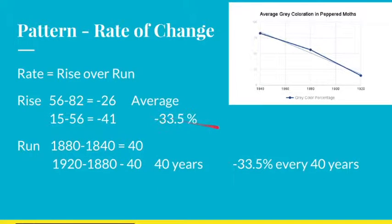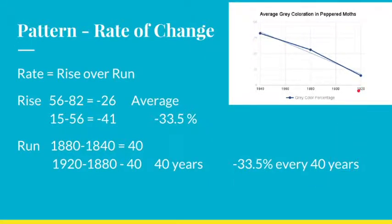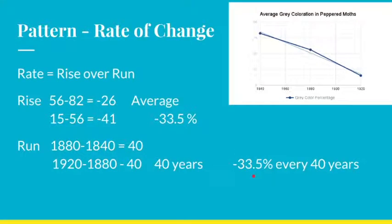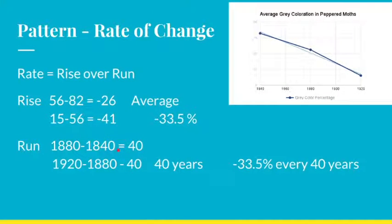So our rise is negative 33.5%, and our run is 40 years. Our rate of change is negative 33.5% every 40 years. We can use that pattern to make a prediction. 1960 is 40 years after 1920, so we'd go from 15% gray and subtract 33.5%. Well, 15 minus 33 is essentially zero, and you can't go below 0%. So we would predict that in 1960, all of the moths would be 0% gray, or 100% black.